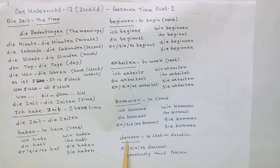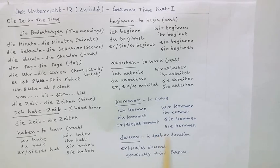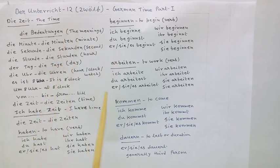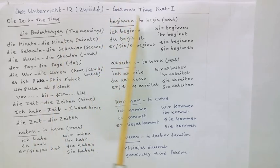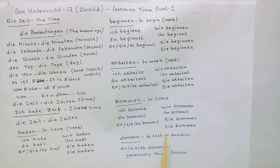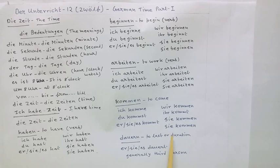Now this is a verb: dauern — that is to last, or duration. It is used generally in the third person: er, sie, es dauert — that is, it lasts. So I repeat: beginnen — to begin, arbeiten — to work, kommen — to come, dauern — to last or duration.